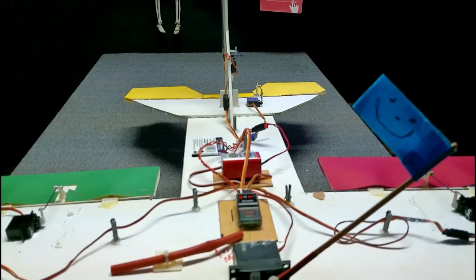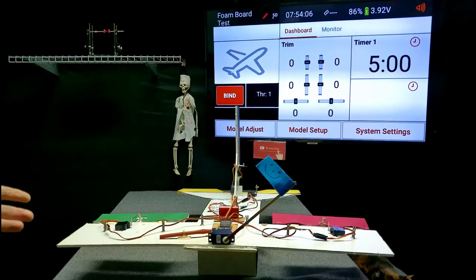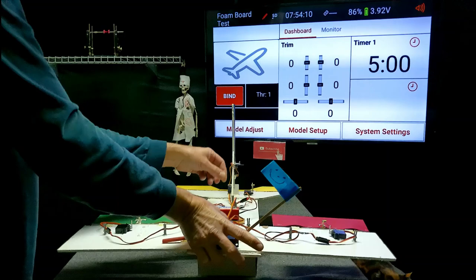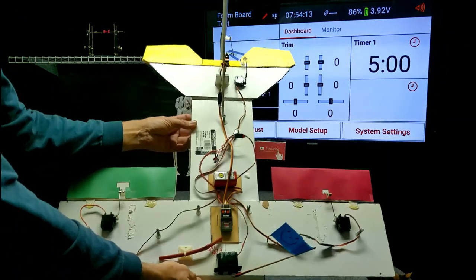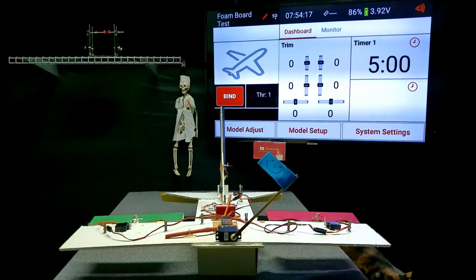All right, let's bind this guy. We're using the AR630 receiver, antennaless. It has a button for binding. So I'm going to hold the button down and turn on the plane. You can see that the receiver is flashing and then we'll bind it.